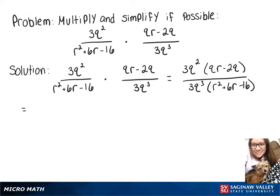On top, we can factor out a q, so 3q squared times q will give us 3q to the third times r minus 2.